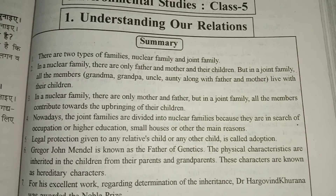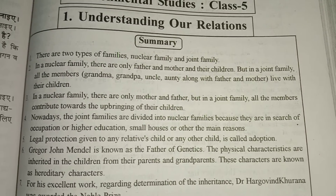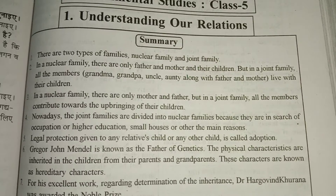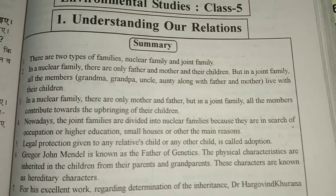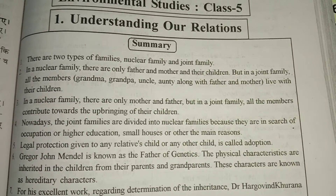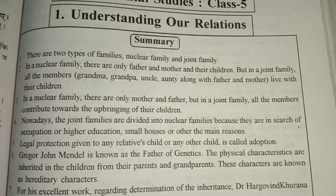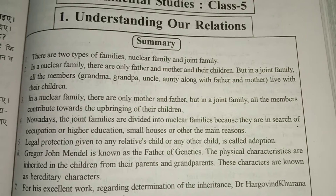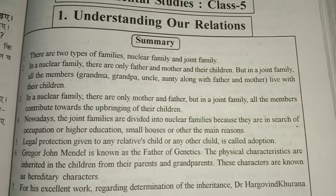Point number two: In a nuclear family there are only father, mother and their children. But in a joint family, all members — grandma, grandpa, uncle, aunt — along with father and mother live with their children.